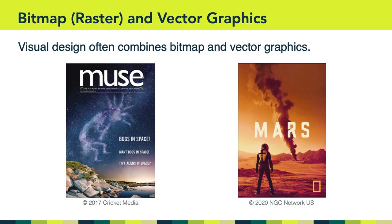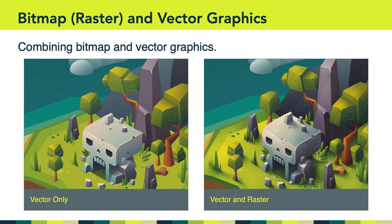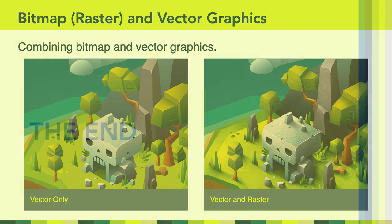Something we will get into more in the next few weeks. Take a look at this image from Affinity Designer by Serif — they have a nice example of an image that's vector only versus one that combines vector and bitmap. In the vector-only image, the trees, monument, and skull are very smooth. But in the combined version, you can see a lot more texture in the grass, trees, skull monument, tower, and background — that's the additional level of detail that bitmap and raster graphics can add to vector graphics. Okay everyone, we're out of time for this week. Have a great week, and I'll see you in Canvas.